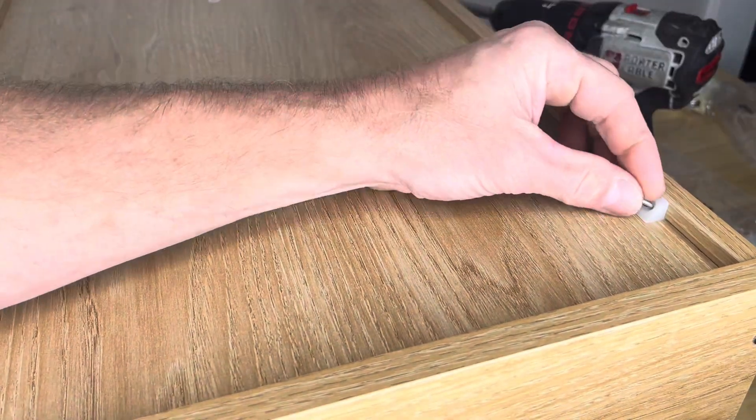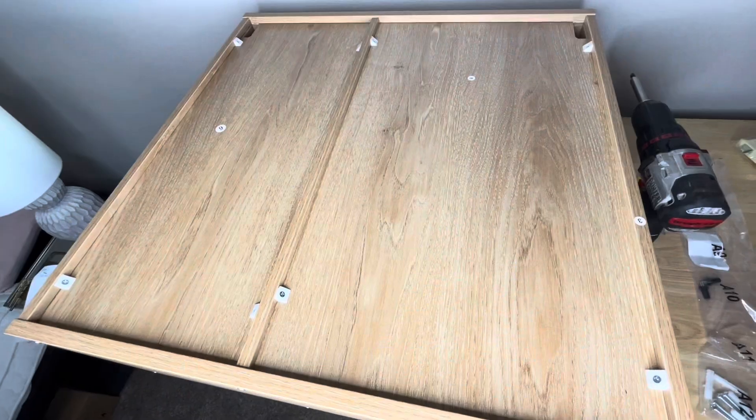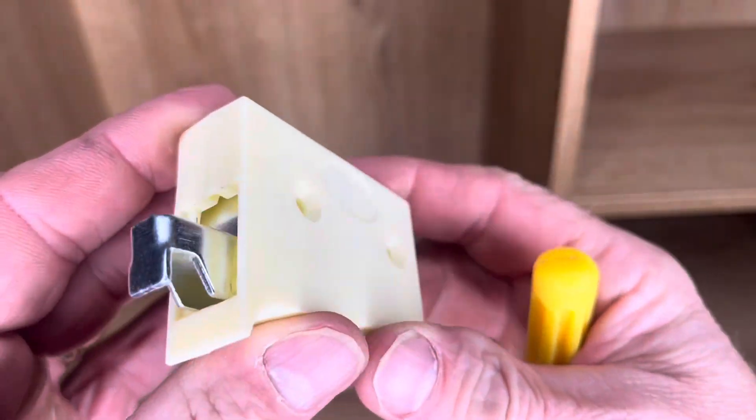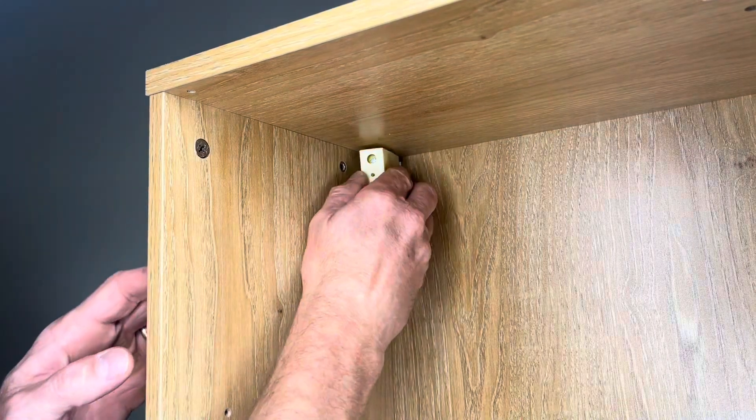Now these things keep that back piece from kind of flopping around and making noise. It's just like a little triangle, a little angle piece. Secure it in there. Now here's the pieces that wind up mounting this thing to the wall, the wall brackets.